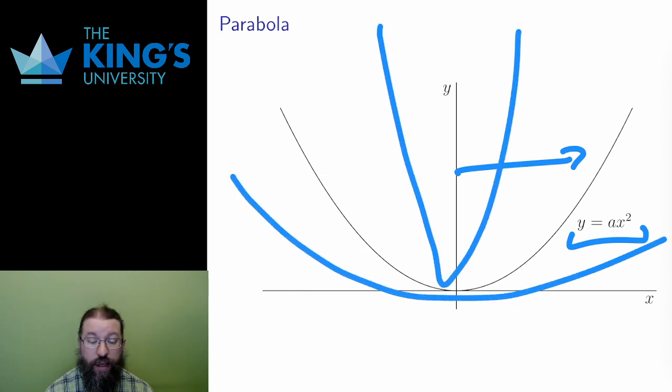As well, if a is negative, the parabola will open downward. But if a is positive, the parabola will open upward, as in this diagram.